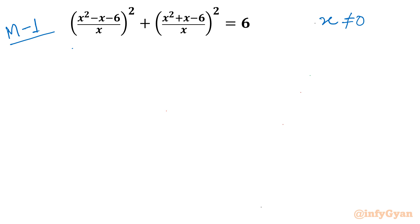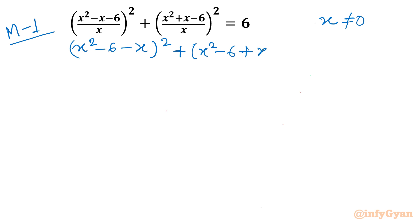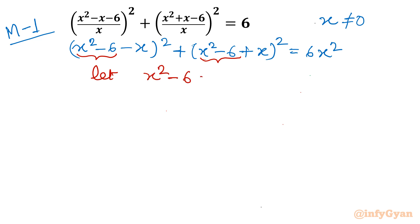Once we multiply this equation by x², we will have (x² - 6 - x) whole squared. The denominator x² cancels out. In the second bracket I will write (x² - 6 + x) — I've just shifted the position of 6 and x — and on the right-hand side I write 6x². Now our substitution is clear: t = x² - 6.